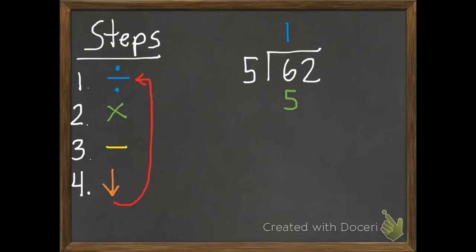Third step is to subtract. So 6 subtract 5 is 1. Fourth step is bring down. So we bring down our 2, which gives us 12 now. Once we bring something down, we need to start back over.